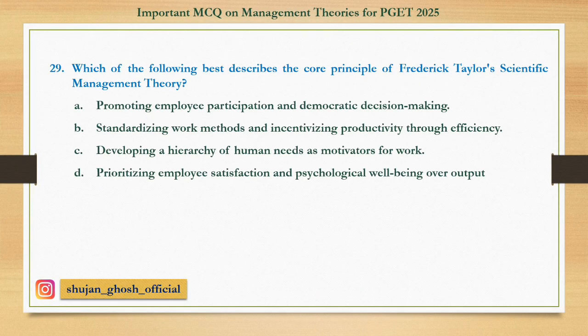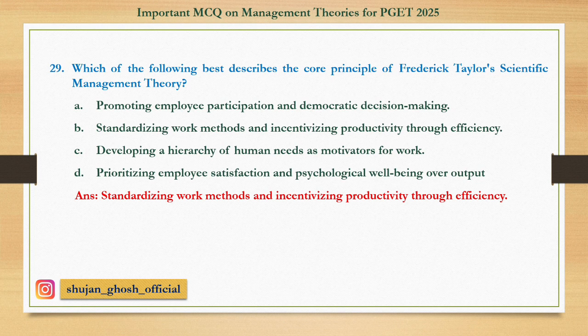Question 29: Which of the following best describes the core principle of Frederick Taylor's scientific management theory? Option A: Promoting employee participation in democratic decision-making. B: Standardizing work methods and incentivizing productivity through efficiency. C: Developing a hierarchy of human needs as motivators for work. D: Prioritizing employees' respect and psychological well-being over output. Answer is Standardizing work methods and incentivizing productivity through efficiency.